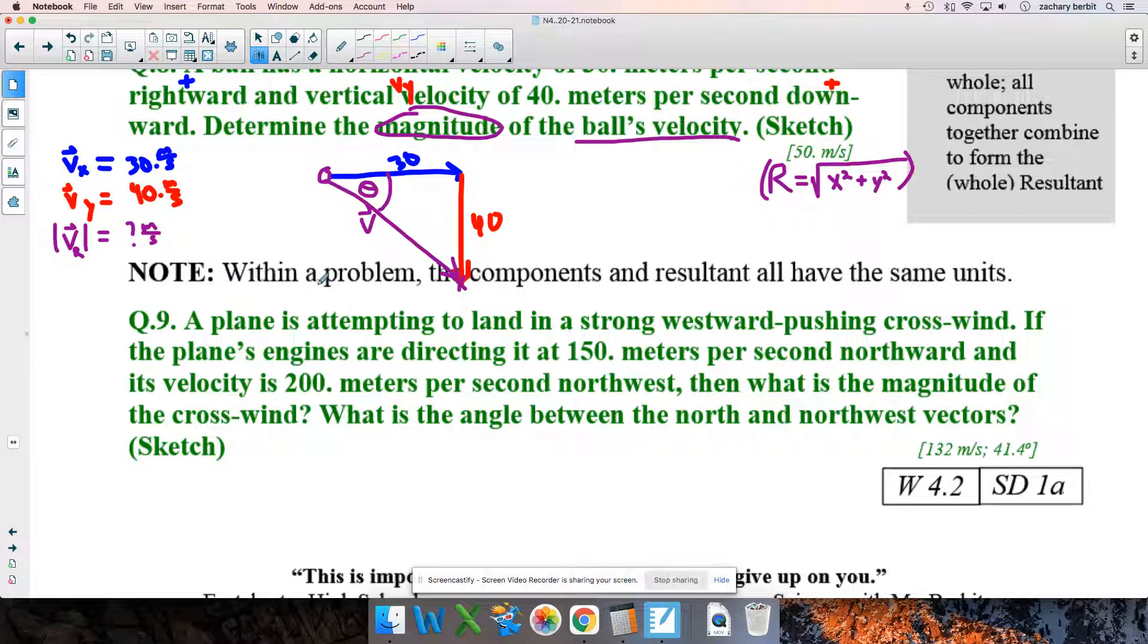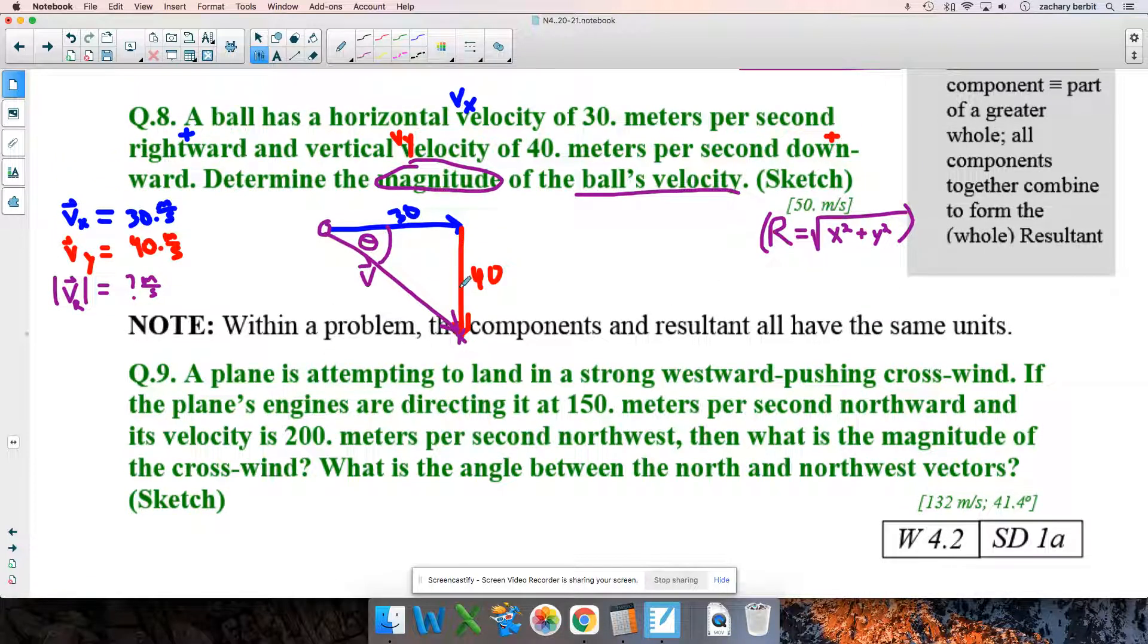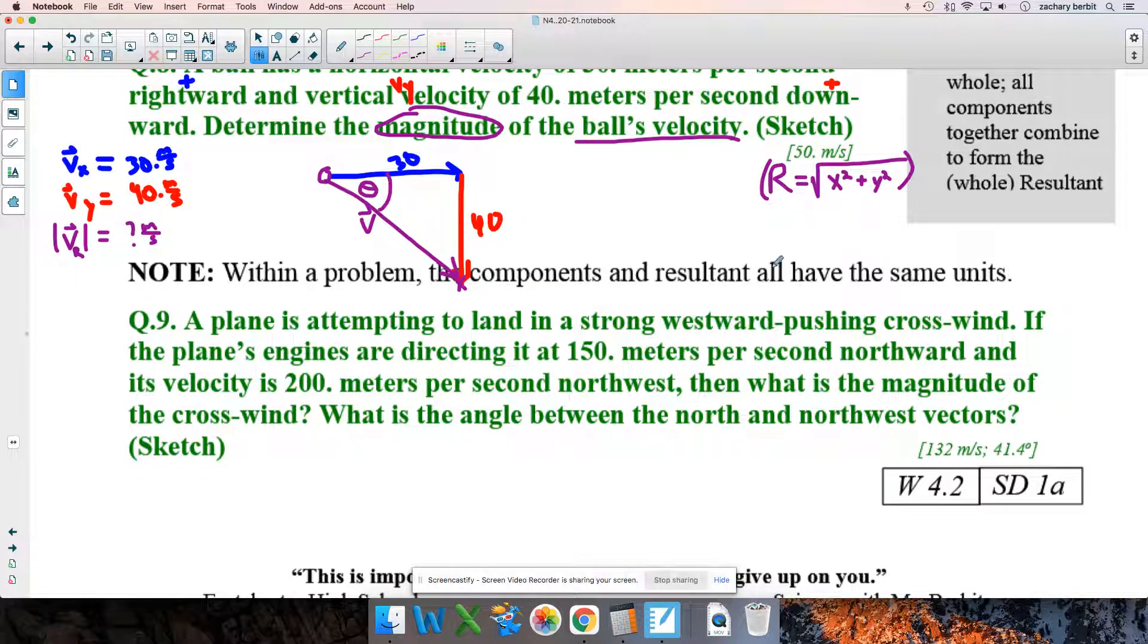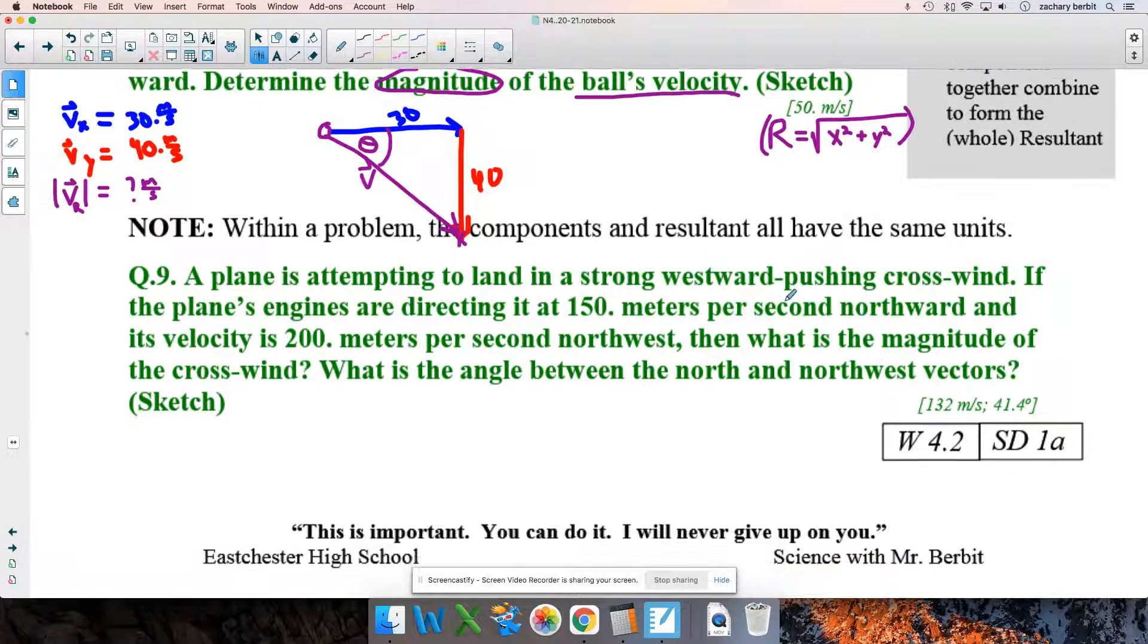Okay. Now, of course, within a problem, it's a nice little reminder. You can only make a resultant with components of the same sort. So, you can't mix a velocity and a displacement or an acceleration and a velocity. It's got to be two velocities or two accelerations or two displacements. So, they have to not only have the same units, they have to be the same physical quantity. All right. Here's another one.